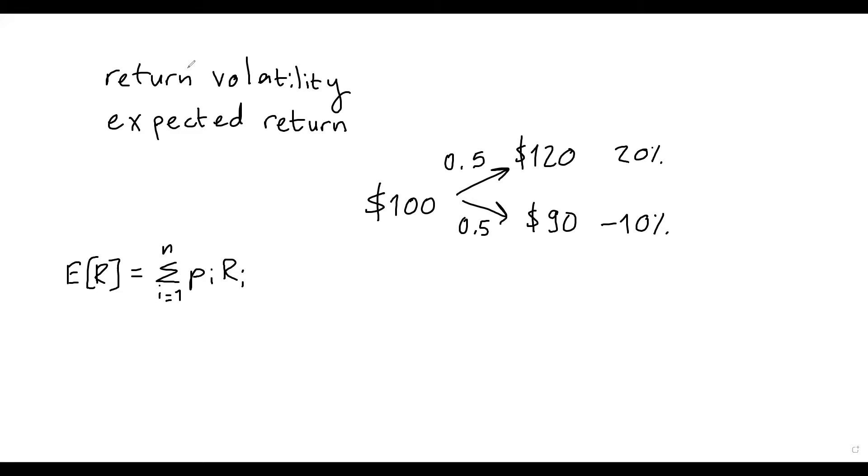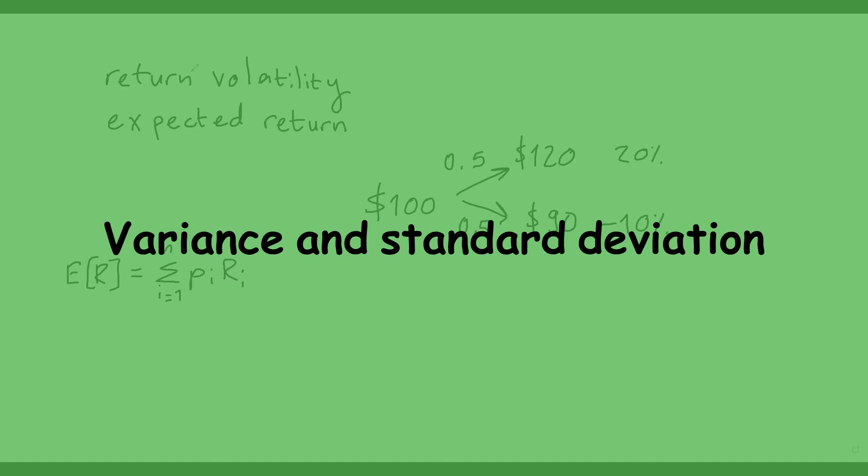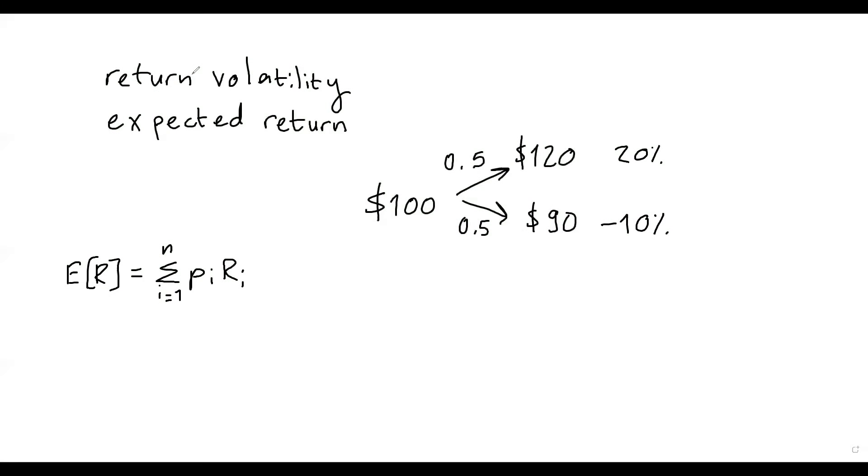Now, we need a measure for our return volatility. To do that, we have to actually learn two measures, two statistical measures. One is variance of returns, and one is standard deviation of returns. So we will begin with the variance, because then the standard deviation is simply the square root of variance. And I will explain why we need these two measures. So let's begin with the variance.